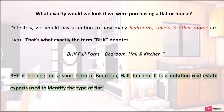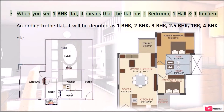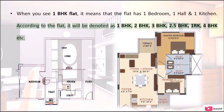It is a notation real estate experts use to identify the type of flat. When you see a 1 BHK flat, it means that the flat has one bedroom, one hall and one kitchen. According to the flat, it will be denoted as 1 BHK, 2 BHK, 3 BHK, 2.5 BHK, 1 RK, 4 BHK, etc.